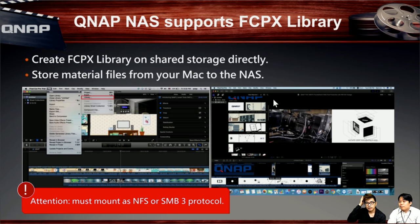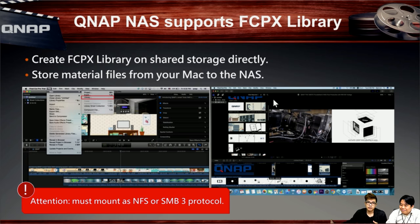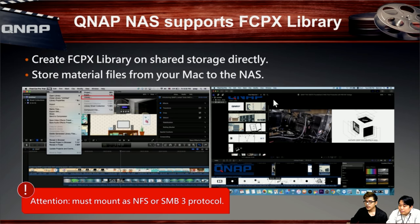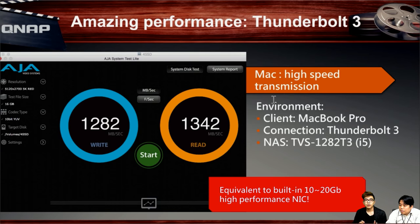This slide shows how to create a library in Final Cut Pro, and we'll demonstrate this shortly. One important thing: you need to mount the library using NFS or a compatible protocol. After covering the workflow and how to input your library in Final Cut Pro and use QFinder Pro to create folders, we'll show you the amazing performance of Thunderbolt 3 working with Mac and QNAP NAS.